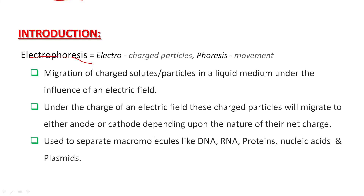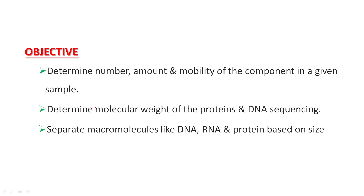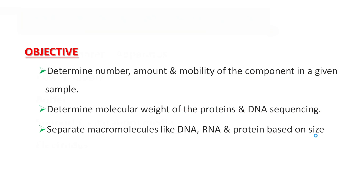In electrophoresis, charged particles migrate toward an anode (positive) or cathode (negative) depending on their charge. It is used to analyze DNA, RNA, proteins, nucleic acids, and plasma. The technique provides information on the number, amount, and mobility of compounds, as well as the molecular weight of proteins.